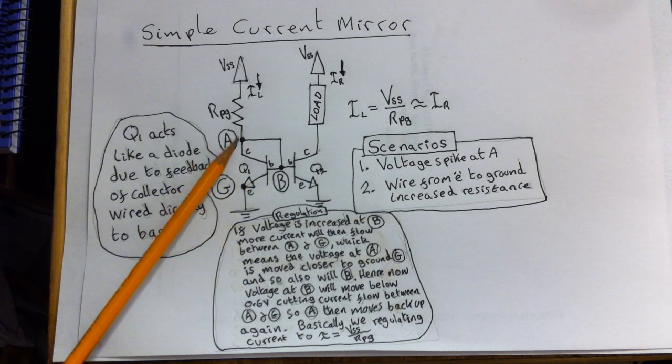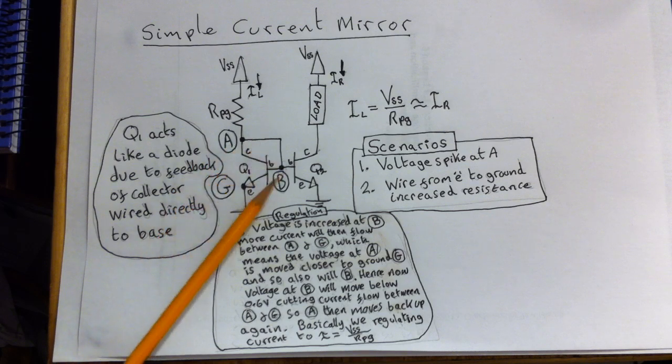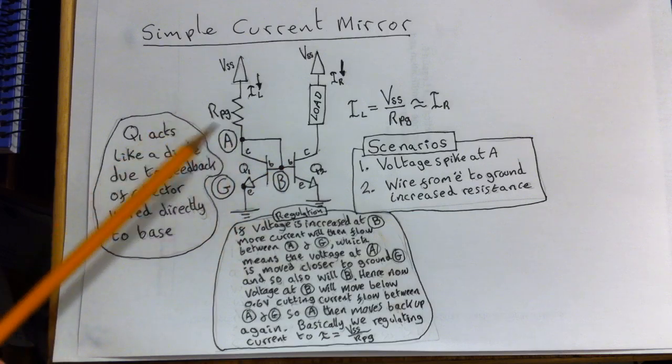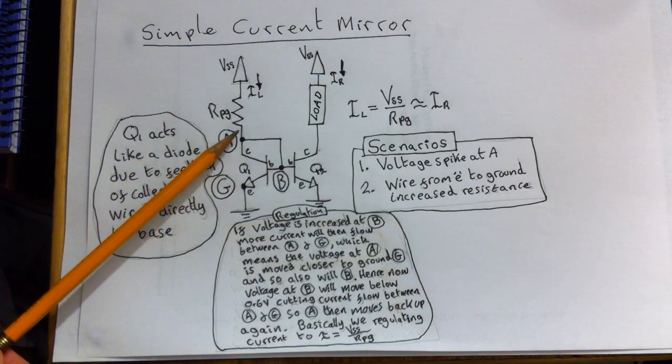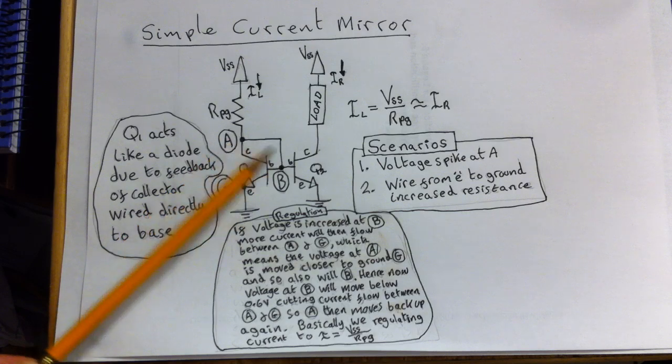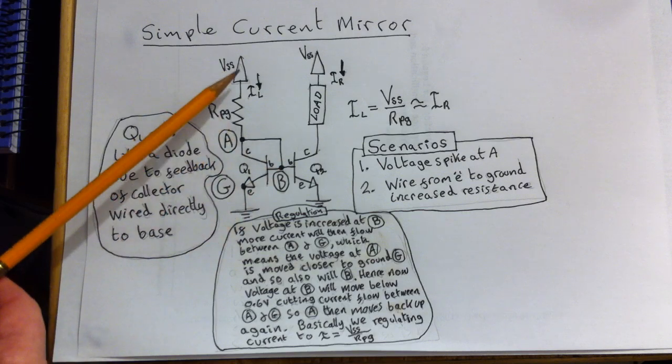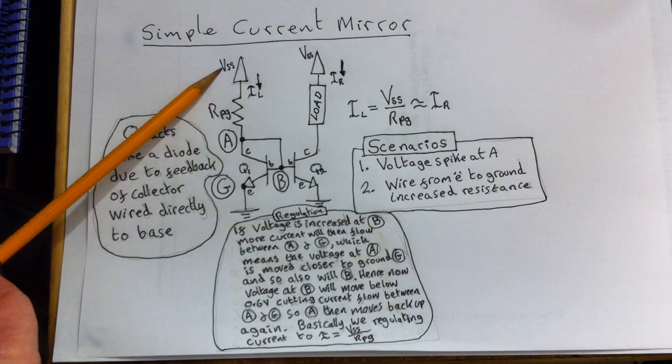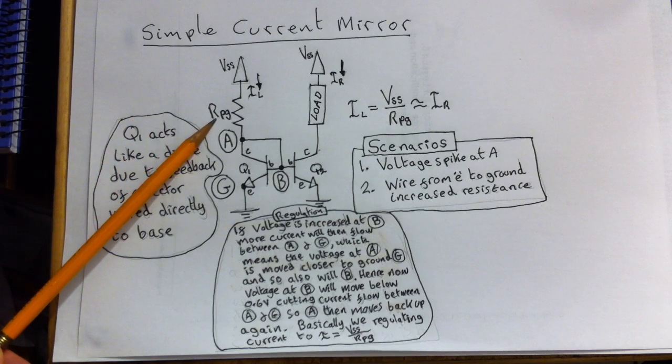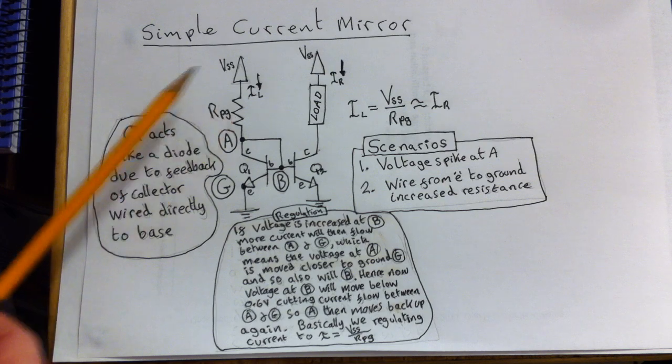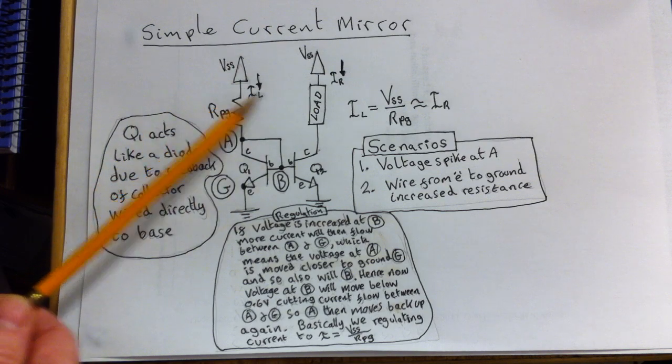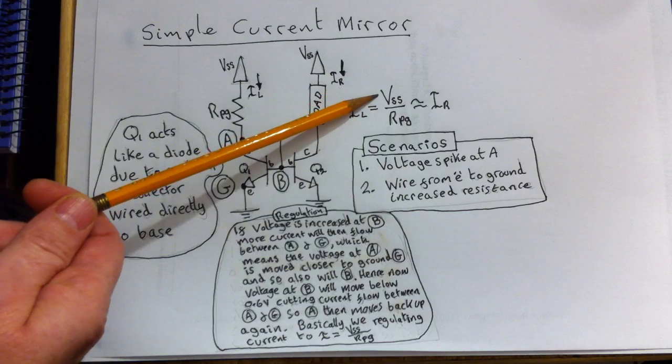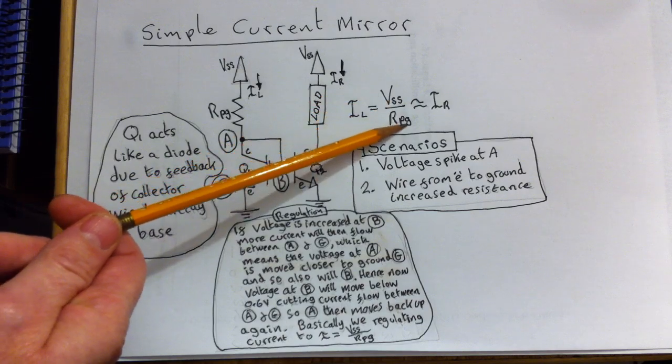And obviously that means, if we have a short from here to ground, then the current is just purely defined by the voltage source here, and what we call here the programming resistor, RPG. So the left-hand current, IL, is simply VSS over RPG.